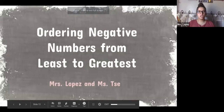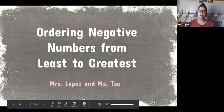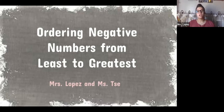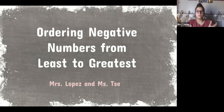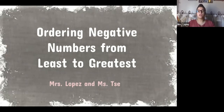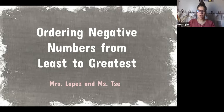Today we're going to be learning about ordering negative numbers from least to greatest. Ordering numbers from least to greatest is simple with positive numbers, but today we're doing it with negative numbers. If you missed our previous lesson on the introduction to negative numbers, go back and get acquainted. We'll also briefly review what a negative number is today.